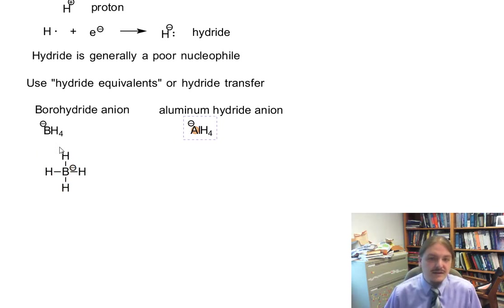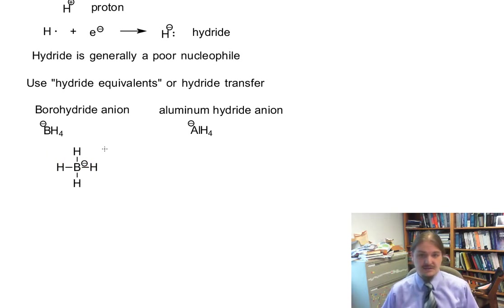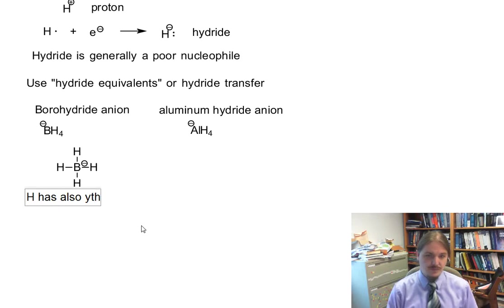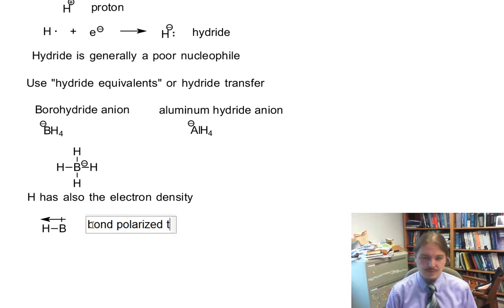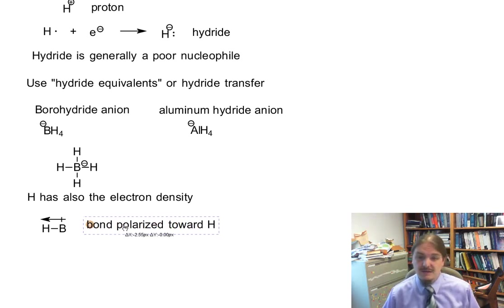The structure of this borohydride anion is a boron with four hydrogens around it. And from a formal charge standpoint, boron has the negative charge in the center. But in fact, hydrogen has all the electron density in this reagent. Hydrogen is more electronegative than boron. And this bond is polarized towards the hydrogen atom, which is what's going to make the hydrogen atom nucleophilic.